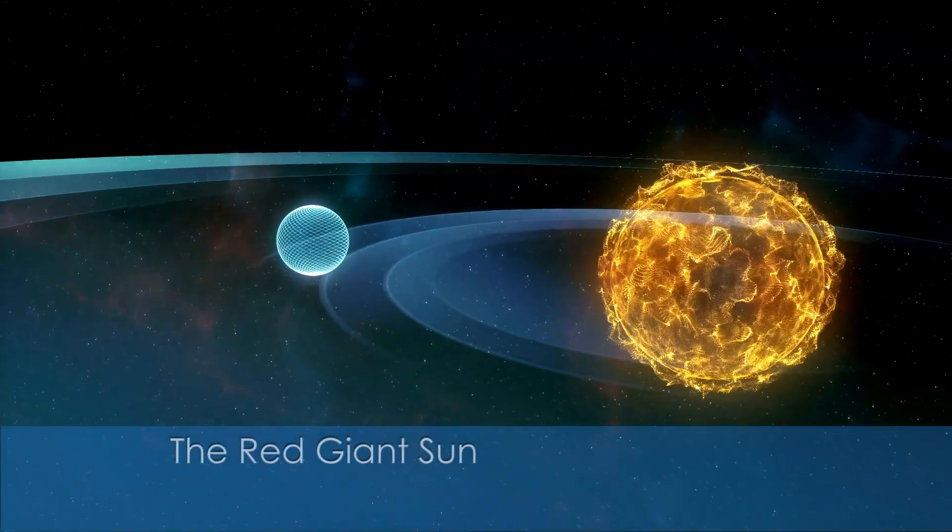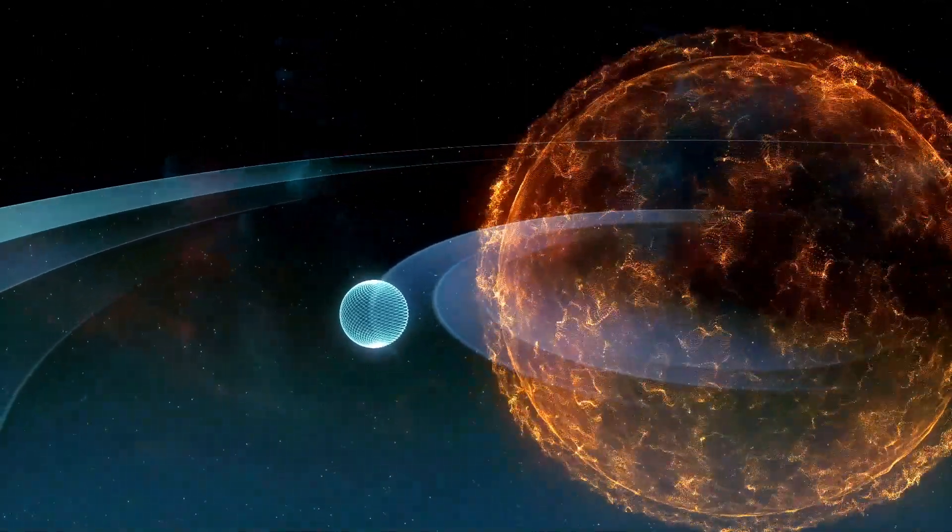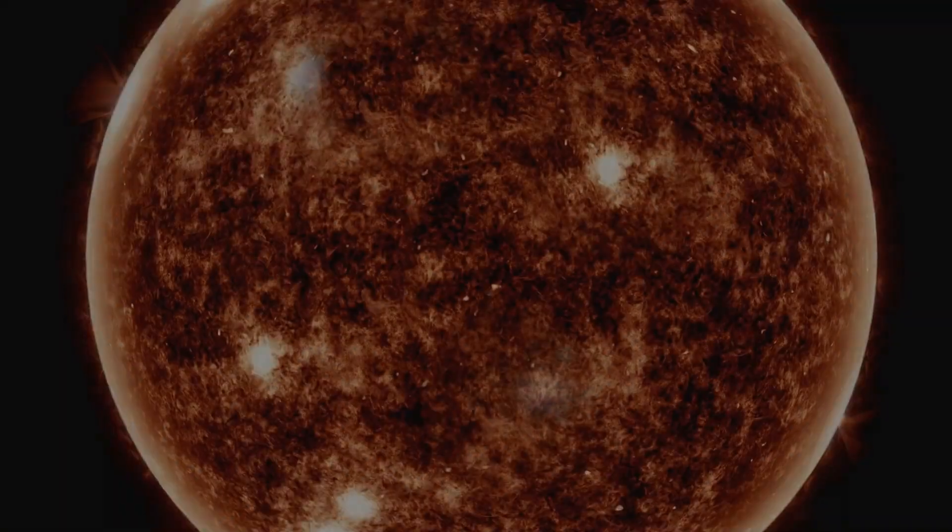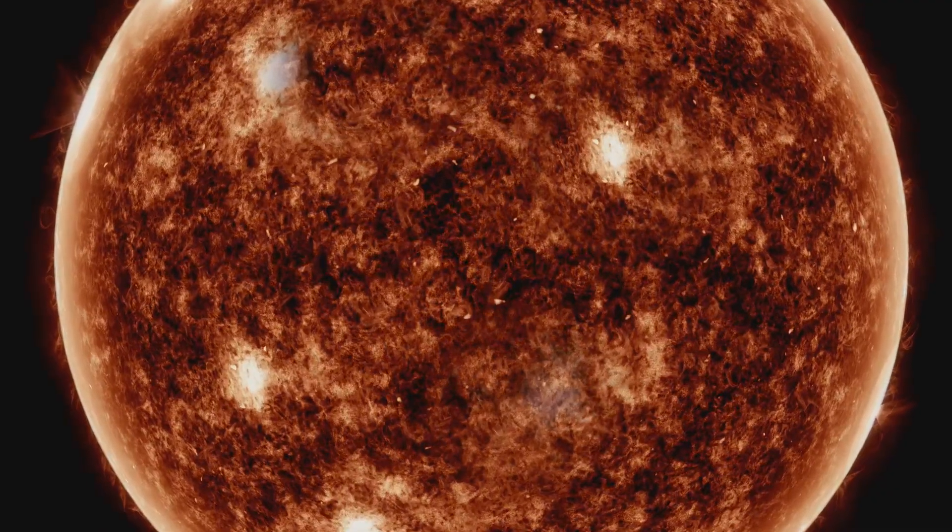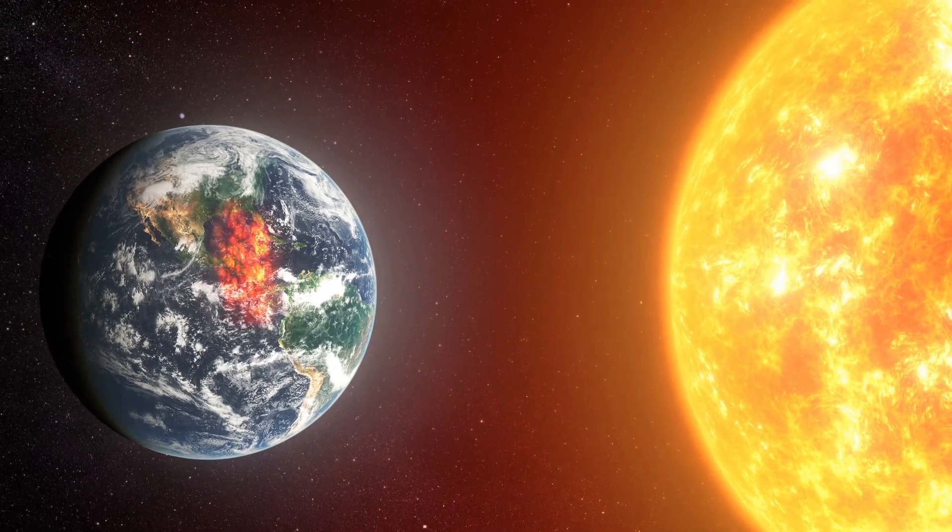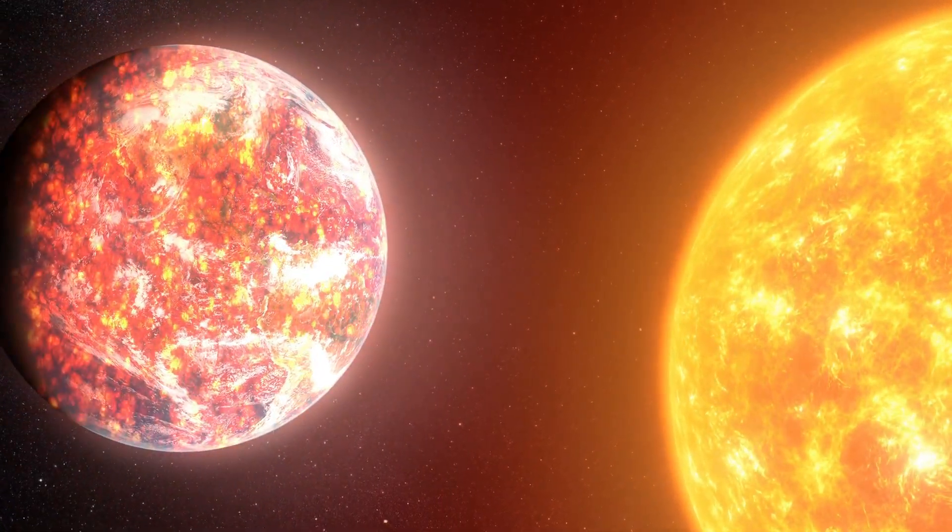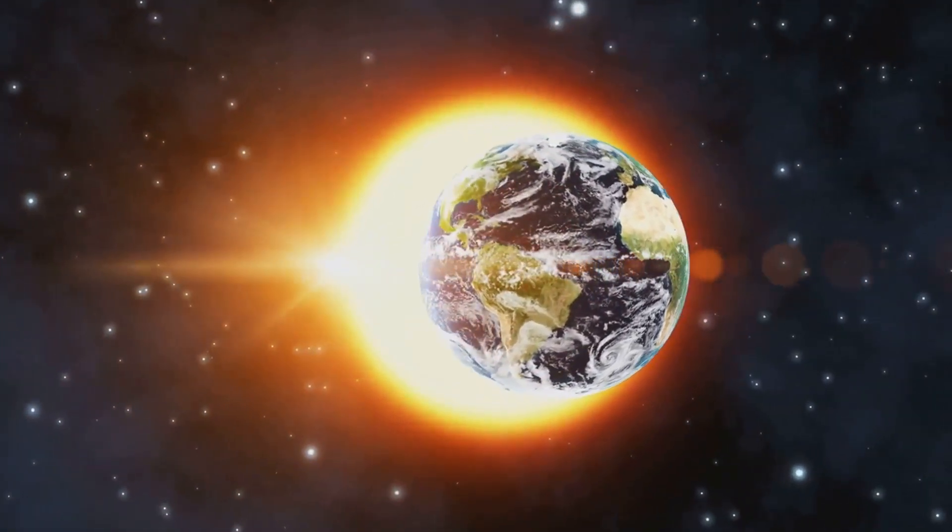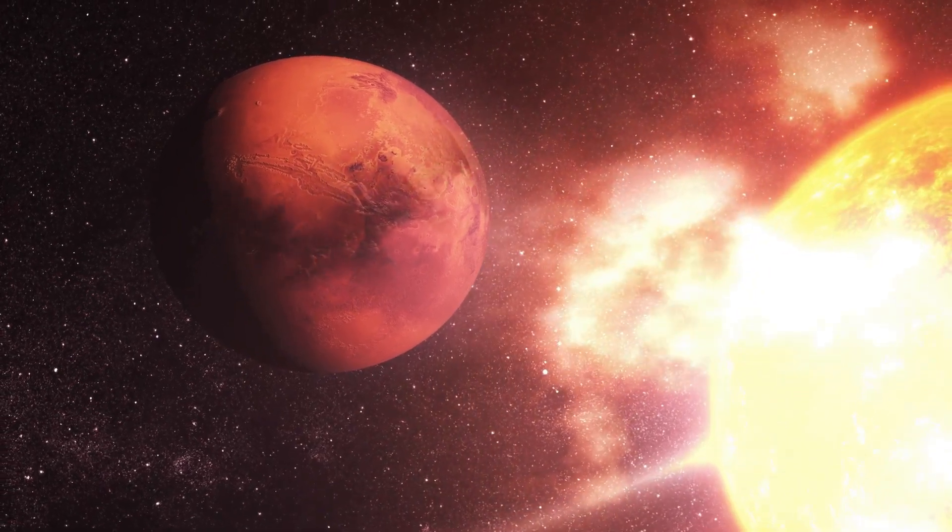Fast forward billions of years and we enter a truly awe-inspiring epoch in the life cycle of our solar system. The Sun, having exhausted much of its hydrogen fuel, will undergo a dramatic transformation. It will begin to swell, its outer layers expanding outwards, transforming it into a colossal red giant star. Imagine a sky dominated by a single enormous red orb, engulfing the inner planets including Mercury, Venus and possibly even Earth. This is the fate that awaits our planet if we remain confined to its surface. The once familiar blue oceans and lush continents will be consumed by the expanding stellar inferno.